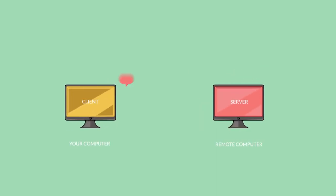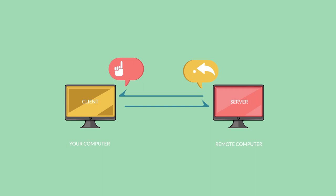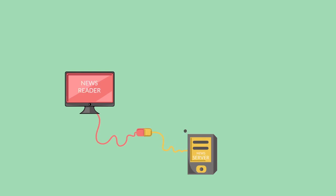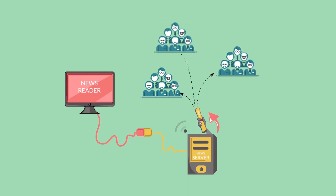Like other internet services, Usenet uses a client-server system in which you use a program called a client that runs on your computer to request services from a program called a server that runs on a remote computer. The client program, called a newsreader, is connected to a remote news server. People send messages called articles or postings to the various news groups.